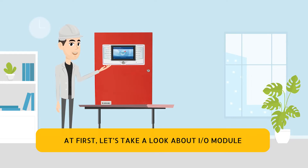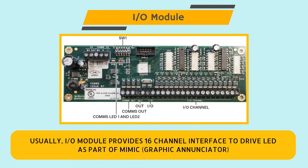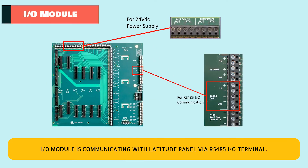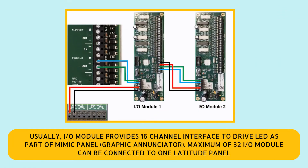First, let's look at the I.O. module. The I.O. module provides a 16-channel interface to drive LEDs as part of a Mimic Panel or Graphic Enunciator. The I.O. module communicates with the Latitude Panel via the RS-485 I.O. terminal. A maximum of 32 I.O. modules can be connected to one Latitude Panel.